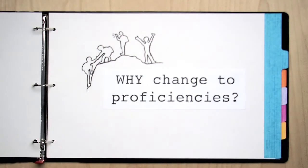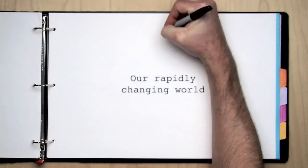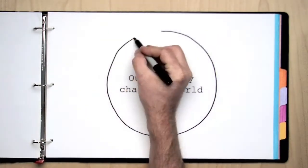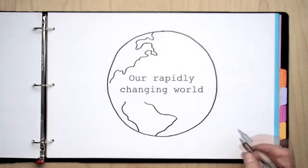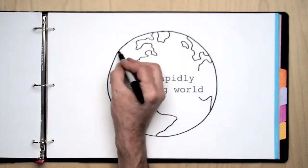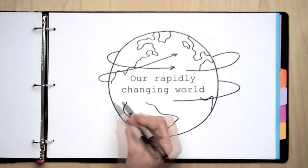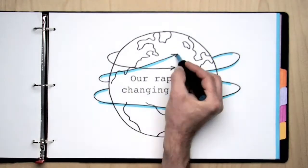Why change to proficiencies? Our rapidly changing world. One reason we are changing to a proficiency-based system is because the world around us is changing. Schools are responding by redefining the ways we learn and how that learning is assessed. In order for us to be effective in whatever path we choose after graduation, we need to be truly prepared.